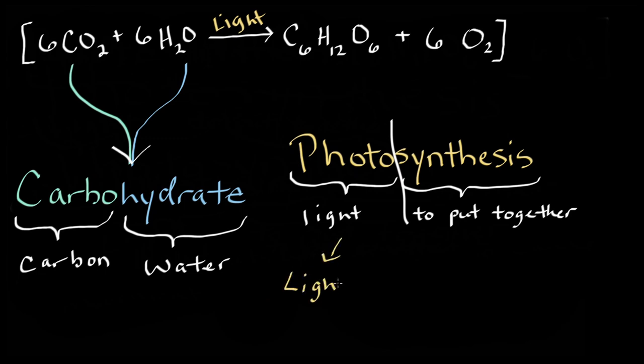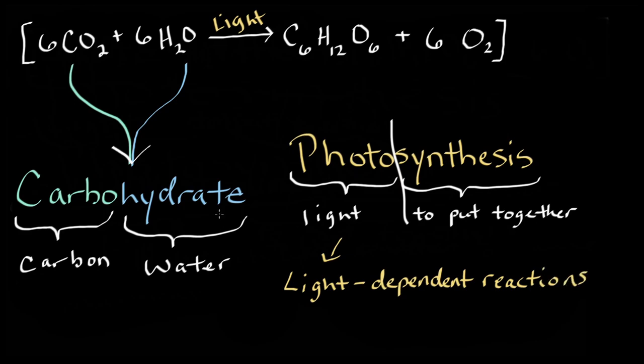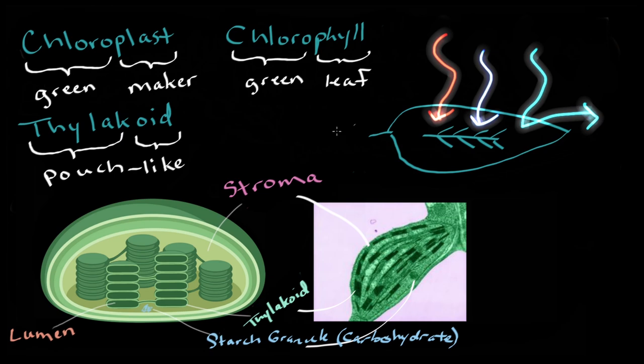So the first segment requires the direct input of light, and as such is referred to as the light-dependent reactions. These happen in a section of the chloroplast called the thylakoid. They form these neat little pouches, the inside of which is called the lumen, and the outside called the stroma.